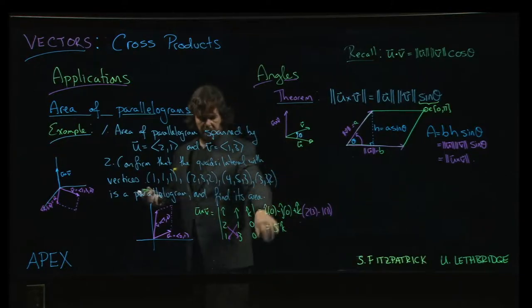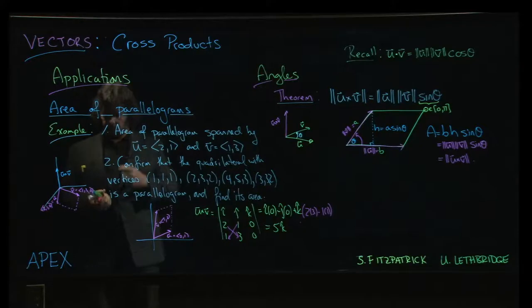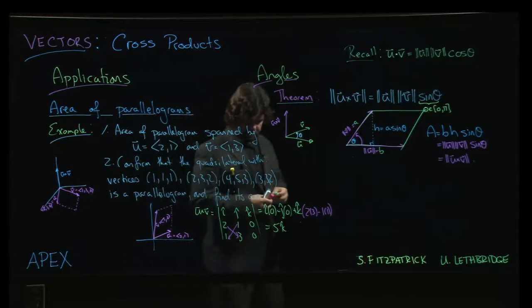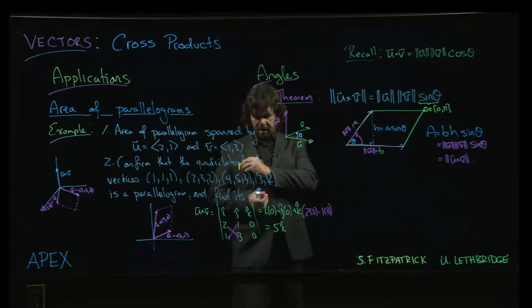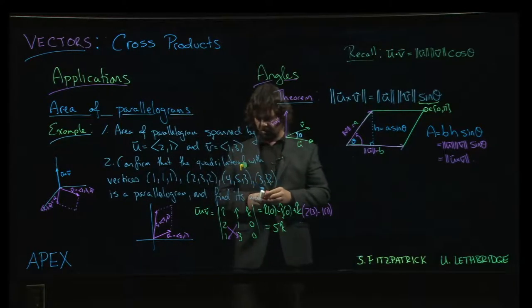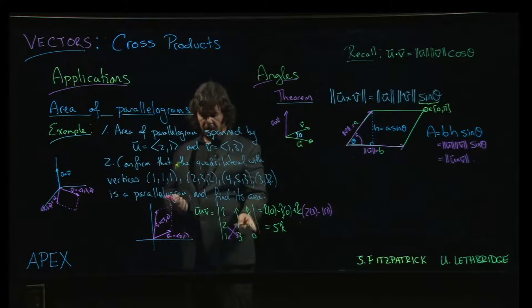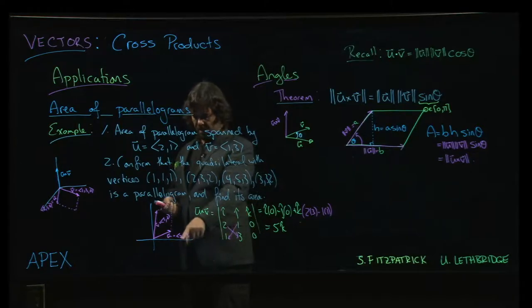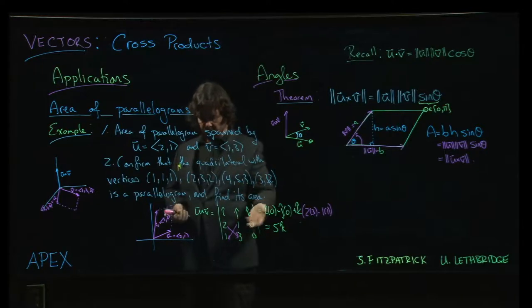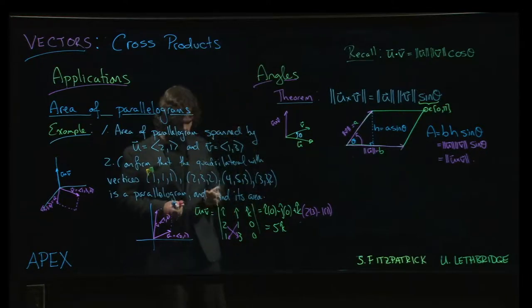And so of course, the magnitude there is 5. So the area of that parallelogram is going to be 5 units. Again, that's something you might encounter in a linear algebra context as well, where you might just be told the area of this parallelogram is the 2×2 determinant that you get by writing the components of these vectors as columns in a determinant. That's another way you can do it.